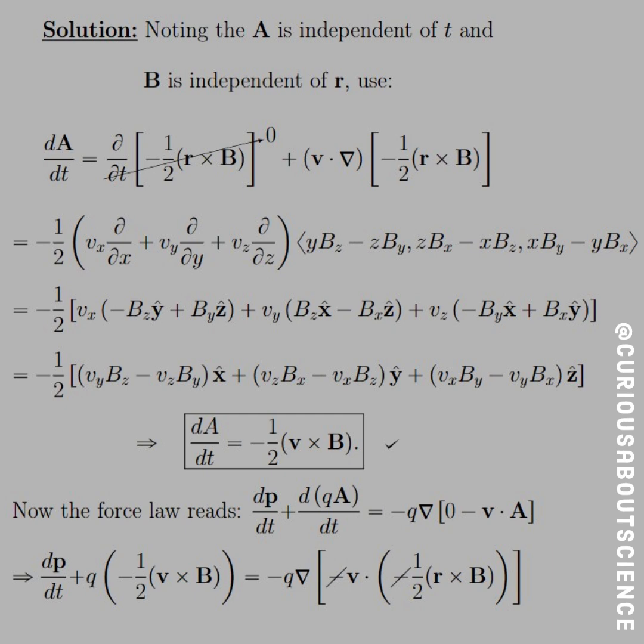So dA/dt is equal to d/dt - that whole thing gets shoved to zero, because A is independent of t. Clearly, B has to be independent of r, because if A were to exist, then the cross product of r with the r vector with B would go to zero, because you can't have any overlapping components. They will sign out to zero. But that being said, we still have a (v·∇) all multiplied by negative one-half r cross B.